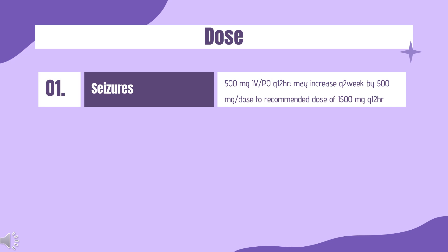Primary Generalized Tonic-Clonic Seizures: Need for oral loading dose not established. Immediate Release (Keppra): 500 mg PO Q12HR; may increase every 2 weeks by 500 mg per dose to a recommended dose of 1,500 mg Q12HR. Effectiveness of doses greater than 3,000 mg per day has not been adequately studied.